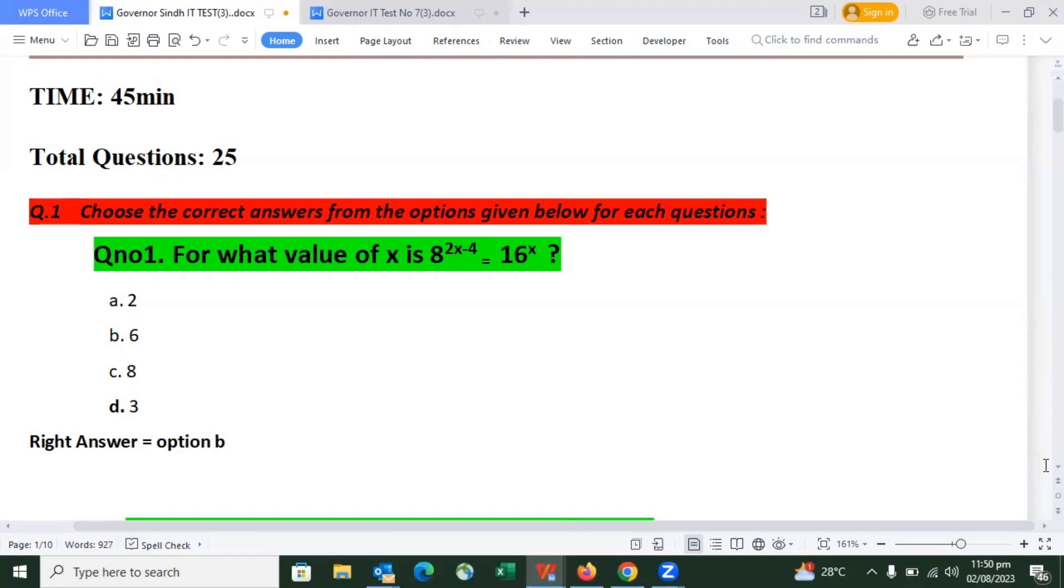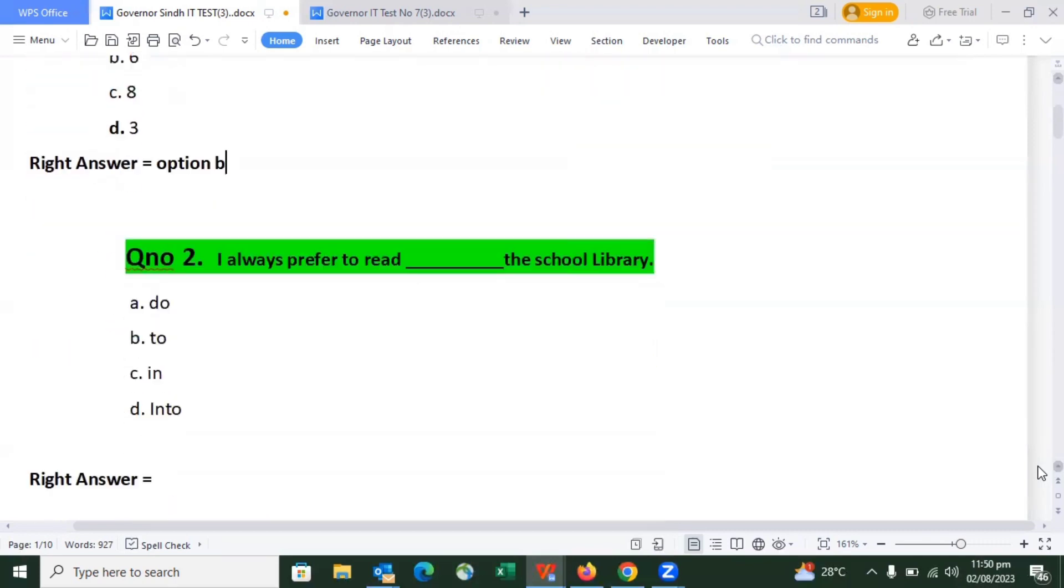The next question, which was the most important question asked last time, refers to the cache for the library. The right answer is option number C.